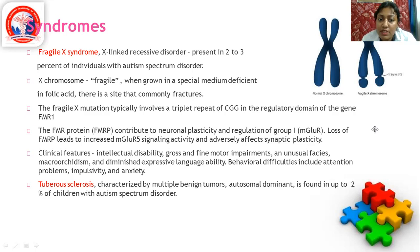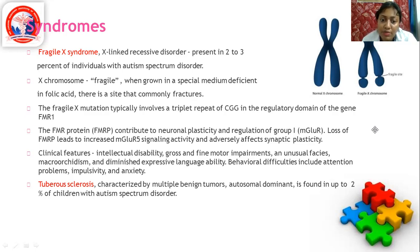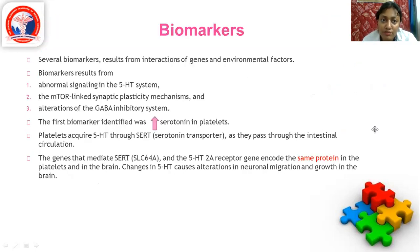Clinical features associated with genetic conditions include intellectual disability, gross and motor impairments, and in unusual cases, microcephaly. Tuberous sclerosis, with multiple benign tumors and autosomal dominant inheritance, is found in 2% of children with autism.